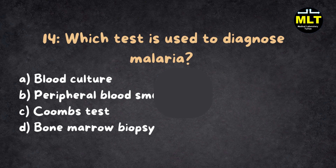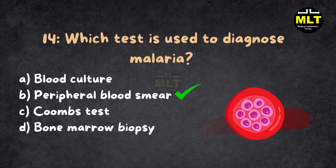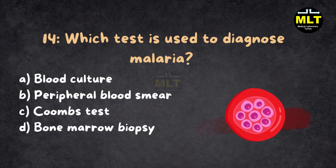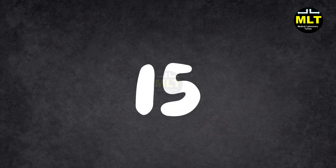Correct answer: B. Peripheral blood smear. Explanation: A peripheral blood smear helps visualize the plasmodium parasites responsible for malaria under a microscope.